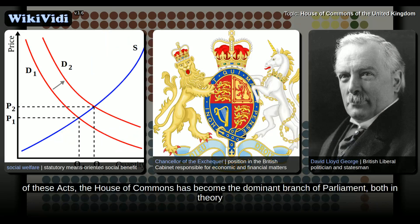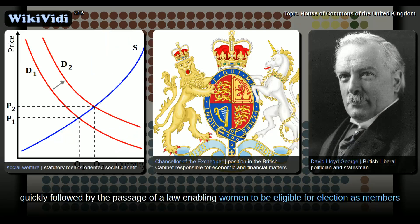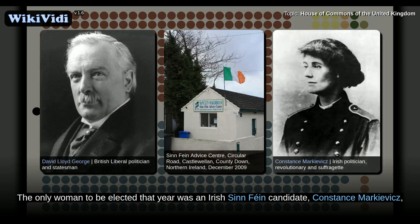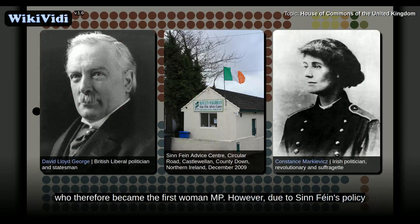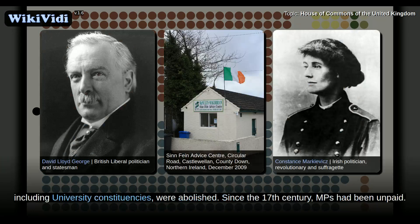In 1918, women over 30 were given the right to vote, quickly followed by the passage of a law enabling women to be eligible for election as members of Parliament at the younger age of 21. The only woman to be elected that year was a Sinn Féin candidate, Constance Markievicz, who therefore became the first woman MP. However, due to Sinn Féin's policy of abstention from Westminster, she never took her seat. With effect from the general election in 1950, various forms of plural voting, including university constituencies, were abolished.